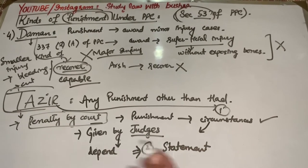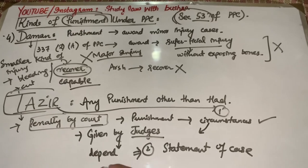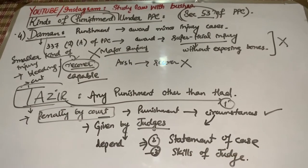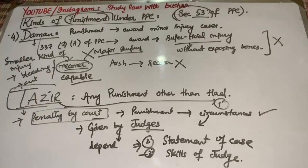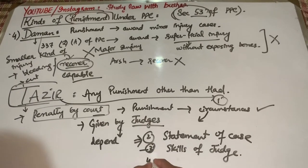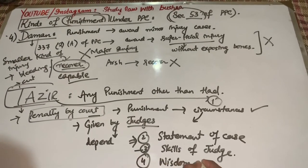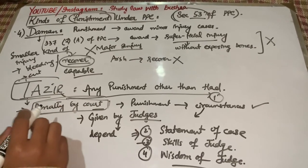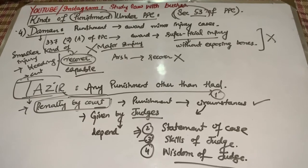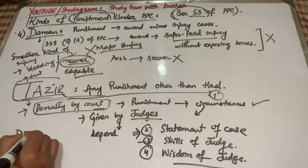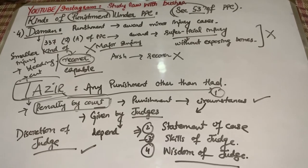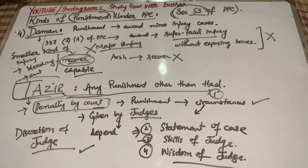Tazir punishment jo hai, woh depend karti hai circumstances of the case, statement of the case, and skills of the judges, or judges ke judicial wisdom ko, unki skills ko dekhte hoi court mein judges ki taraf se di jati hai. Us punishment ko, us penalty ko hum kehte hain Tazir punishment. It depends upon the discretion of judge — judge ki marzi par depend karthi hai ki woh kis case ko dekhte hoi kya punishment award karega.